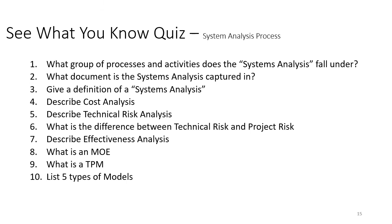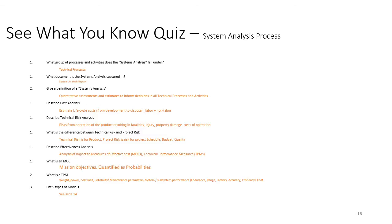That brings us to the end of this video on system analysis process. Here is a short quiz: pause the video and answer questions such as — what group of processes does system analysis fall under? What document captures system analyses? Give a definition of system analysis. Describe cost analysis and technical risk analysis. Understand the difference between technical risk and project risk. Describe effectiveness analysis. What is an MOE and a TPM? List five types of models used. Pause and check your answers on the next slide when you're ready.